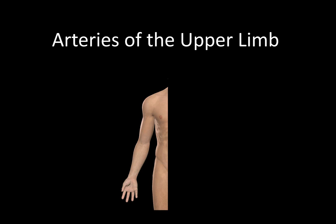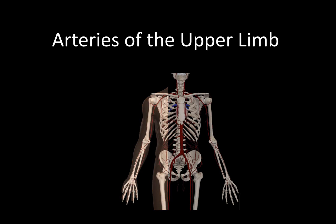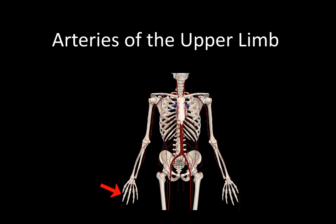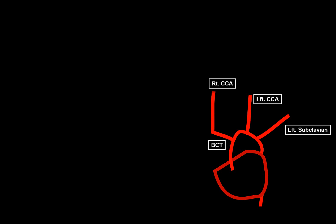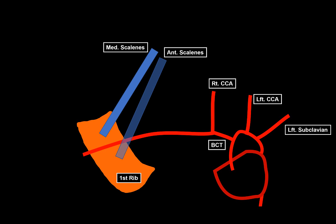This video is about the arterial blood supply of the upper limb, all the way from the axillary artery until the tip of your fingers. The aorta leaves the heart giving off the left common carotid artery, the left subclavian, and the brachiocephalic trunk, which divides into the right common carotid artery and the right subclavian. The major blood supply to the upper extremities comes from the subclavian artery. As soon as the subclavian artery passes the first rib, it becomes the axillary artery — and this is where we start.